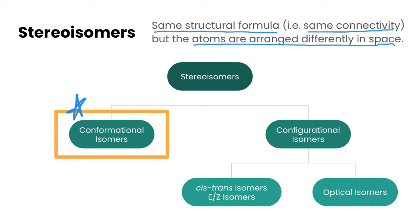There's a variety of different types of stereoisomers, including configurational isomers, which have a couple of types, and then as I said, we're focusing on conformational isomers here in this video. So let's just get right into it.